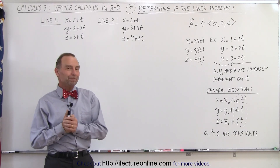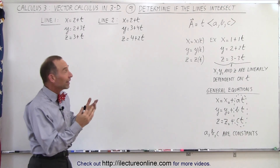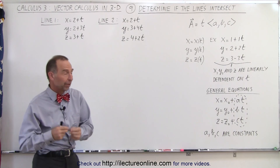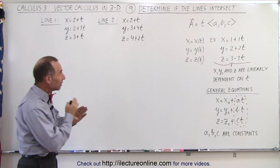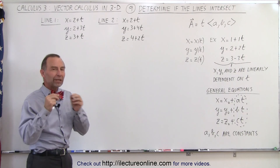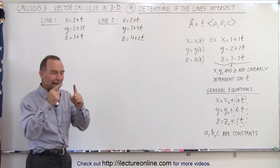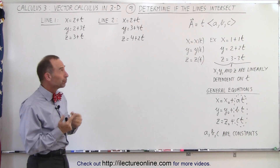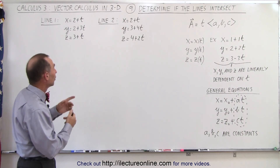Welcome to my lecture online. In this example, we're trying to find out if the two lines represented by the three parametric equations intersect one another — in other words, is there some point in space where both lines cross at that exact point? The way to do that is as follows.